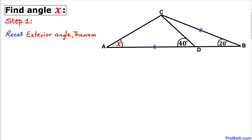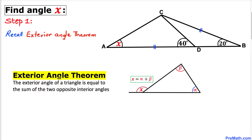Let's recall the exterior angle theorem: the exterior angle of a triangle is equal to the sum of the two opposite interior angles. In our case, this exterior angle equals the sum of the two opposite interior angles alpha and beta.